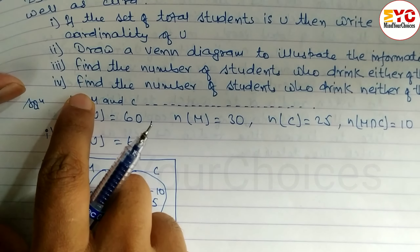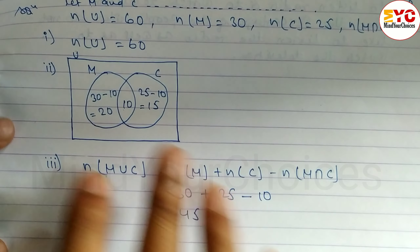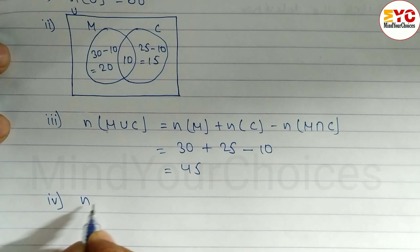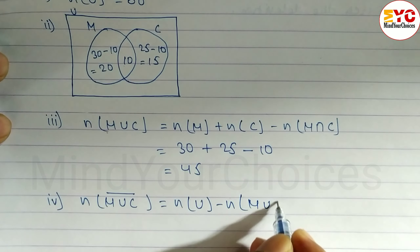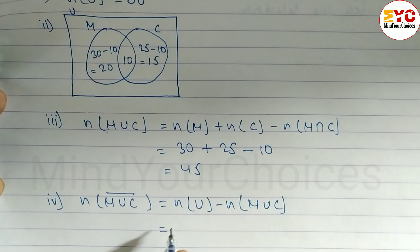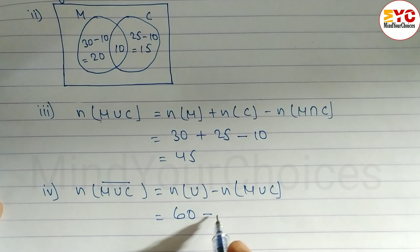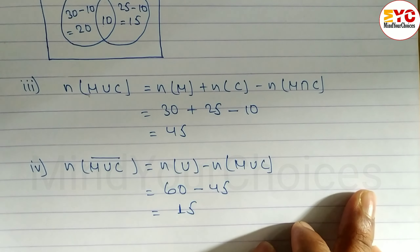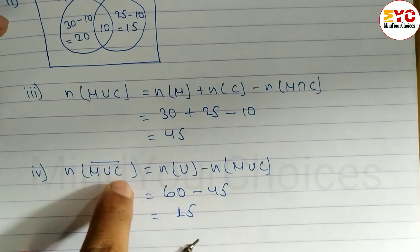Number 4: Find the number of students who drink neither of them. 'Neither of them' means none drink milk or curd — that is the union complement. Formula: n(M ∪ C)' = n(U) − n(M ∪ C) = 60 − 45 = 15. So 15 students drink neither milk nor curd. Hope you understand this question taken from Class 10 Sets.